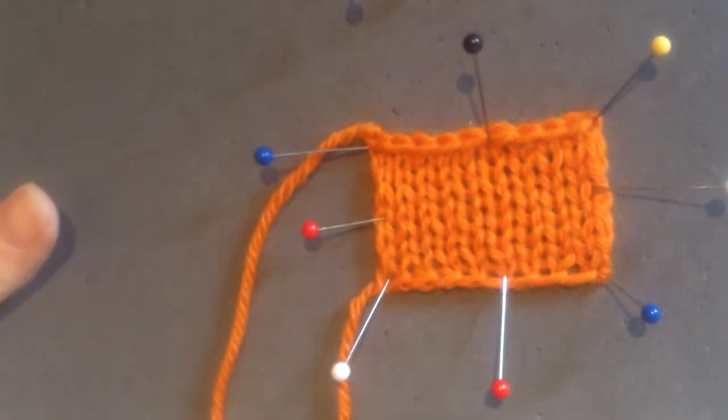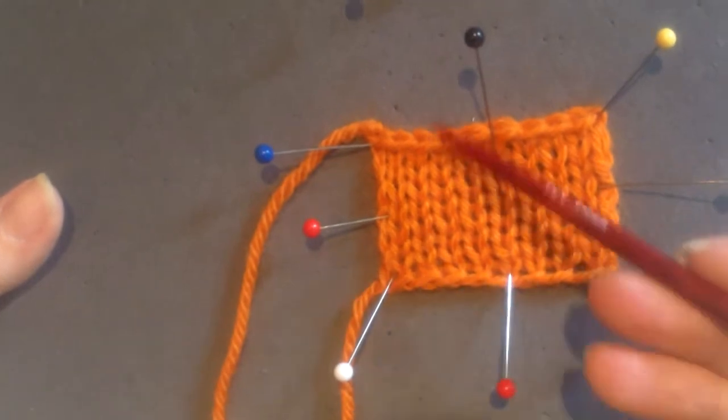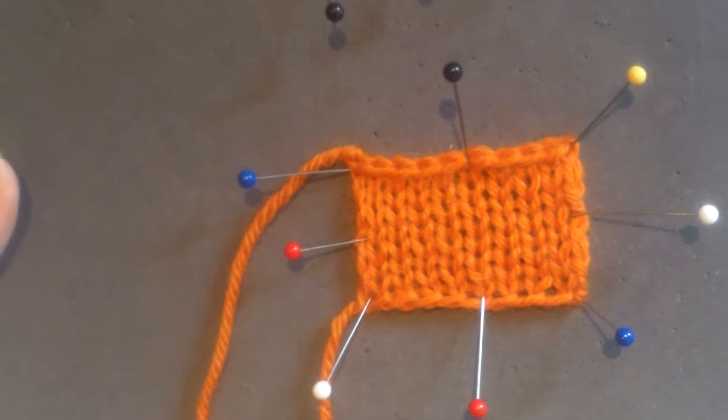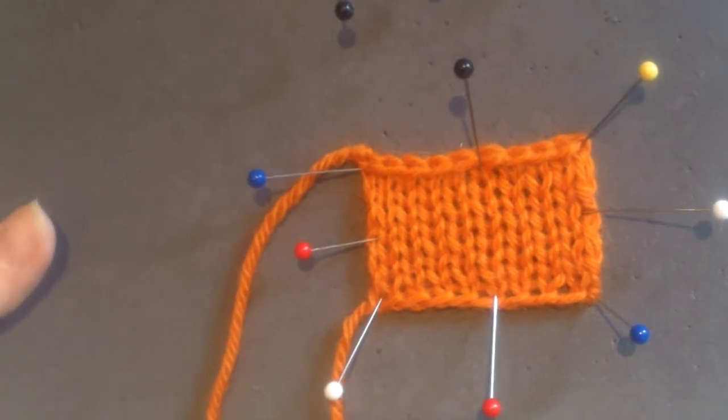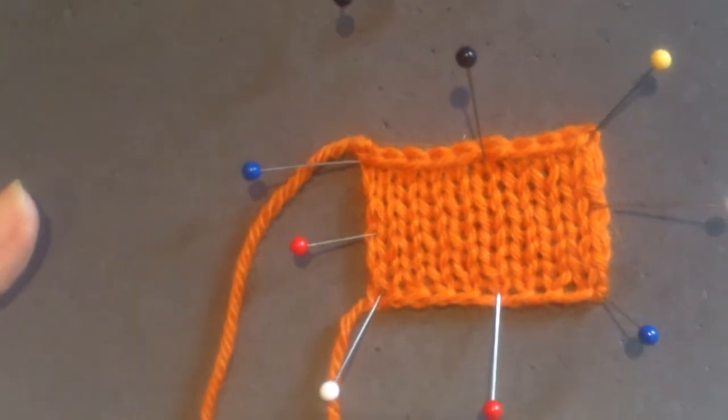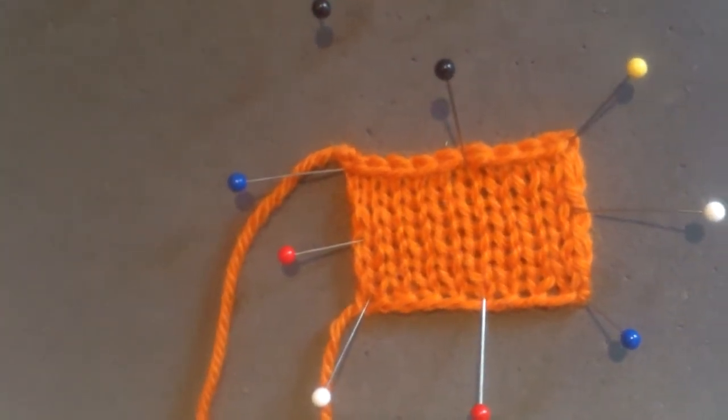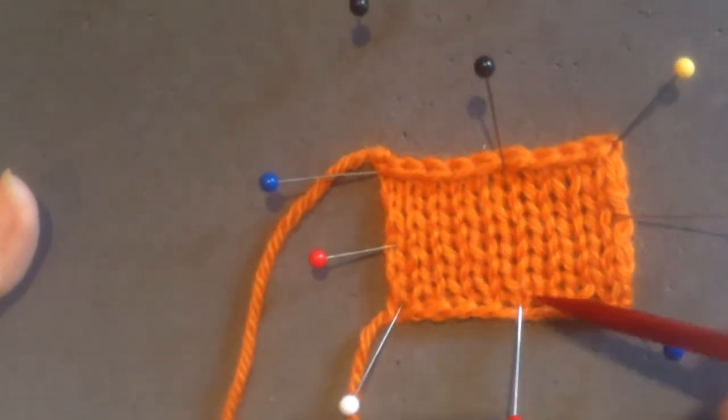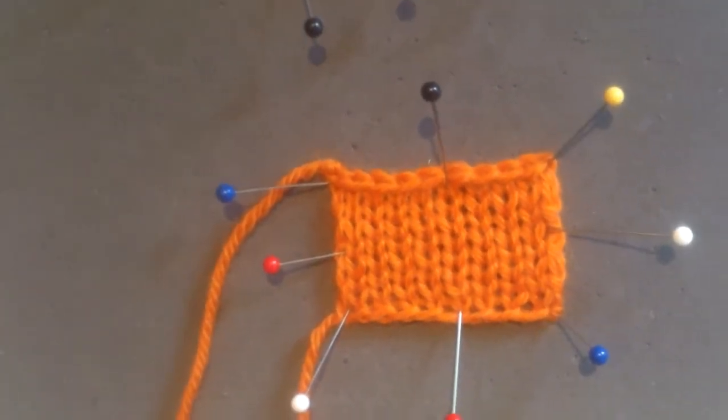How a swatch should look, how your work should look, is the bind-off edge should match your cast-on edge. Now it's never going to match exactly because a bind-off is going to be tighter than a cast-on edge if you're using the long tail cast-on. There are cast-ons that are tighter, but you should be able to square off the corners without having to work it too much.